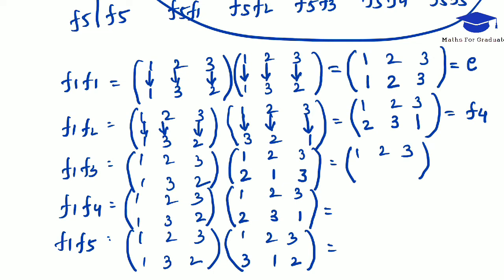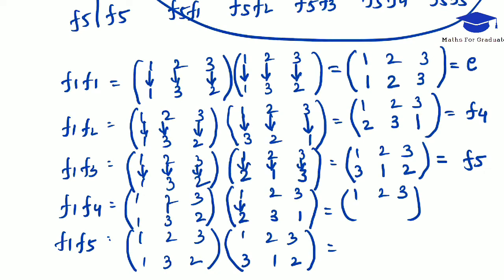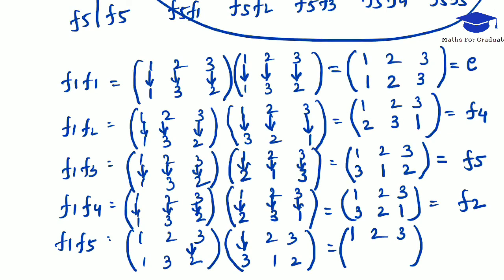For F1 composed with F3: 1 is mapping to 2, and 2 is mapping to 3, so this is 3. 2 is mapping to 1, and 1 is mapping to 1, so it will be 1. 3 is mapping to 3, and 3 is mapping to 2, so it will be 2. This is F5. For F1 composed with F4: 1 is mapping to 2, and 2 is mapping to 3, so it will be 3. 2 is mapping to 3, and 3 is mapping to 2, so it will be 2. 3 is mapping to 1, and 1 is mapping to 1, so it will be 1. This is F2. For F1 composed with F5: 1 is mapping to 3, and 3 is mapping to 2, so it will be 2. 2 is mapping to 1, and 1 is mapping to 1, so it will be 1. 3 is mapping to 2, and 2 is mapping to 3, so it will be 3. This is F3.